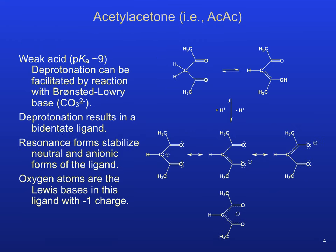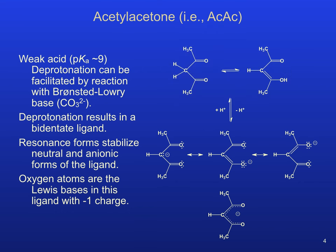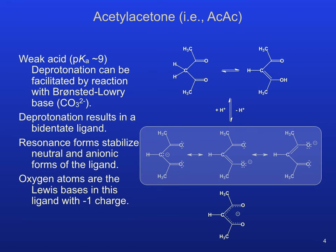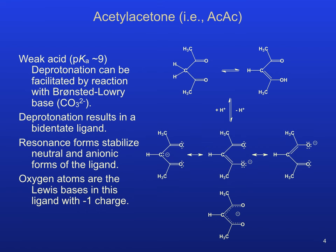Acetylacetone exhibits tautomerism and readily converts between the keto and enol structural isomers. This bidentate ligand can be deprotonated by a strong Lewis base, and several resonance forms of the resulting conjugate base stabilize this minus-1 anion. The Lewis base characteristics of this ligand result from the non-bonded electron pairs on each oxygen atom, which can be used to form dative bonds in a transition metal complex.